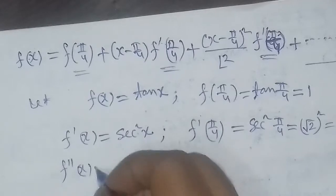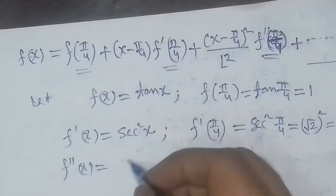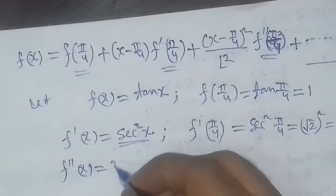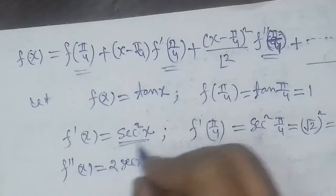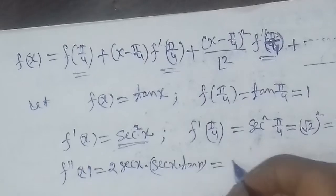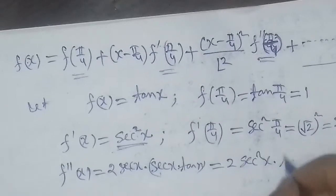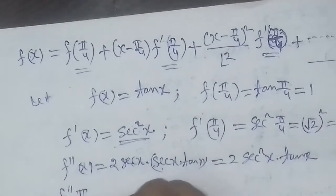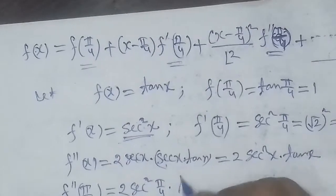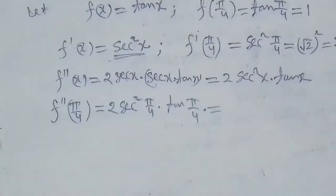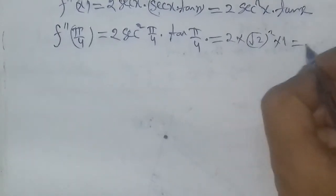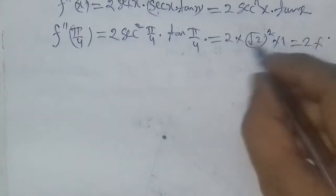For the third term, we need the second derivative. We differentiate sec²x to get f''(x). Differentiating sec²x gives 2·sec(x)·sec(x)·tan(x), which simplifies to 2·sec²x·tan(x). Evaluating at π/4: f''(π/4) equals 2 times sec²(π/4) times tan(π/4) equals 2 times 2 times 1, which gives 4.